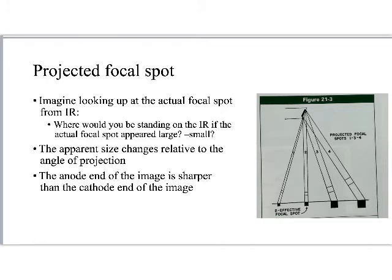One thing I like about this illustration is that there is only one effective focal spot — it does not have an S after it. There are a number of different projected focal spots, and any one of these are ways that are being projected towards the image receptor. The reason I stress that grammar is because the effective focal spot is very carefully defined — it is what we wanted, it's the whole reason we did the angle thing to begin with. The projected focal spots are a shortcoming of it. It is not quite perfect.